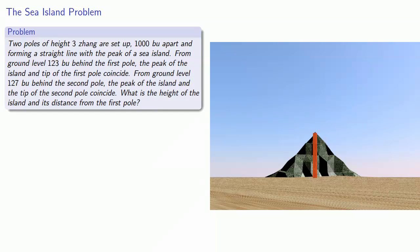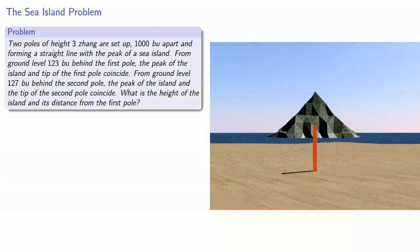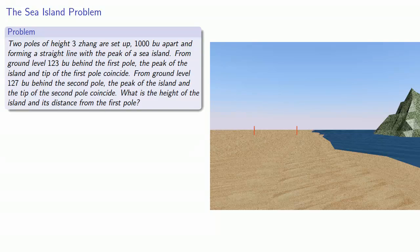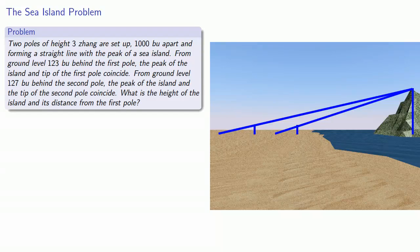So through the magic of 3D animation, we'll see what this given information corresponds to. And if we look at this from the side, those sight lines form the diagonals of some rectangles that we can use the Out-In Method on. So we have the height of the island. And let's complete a few rectangles.